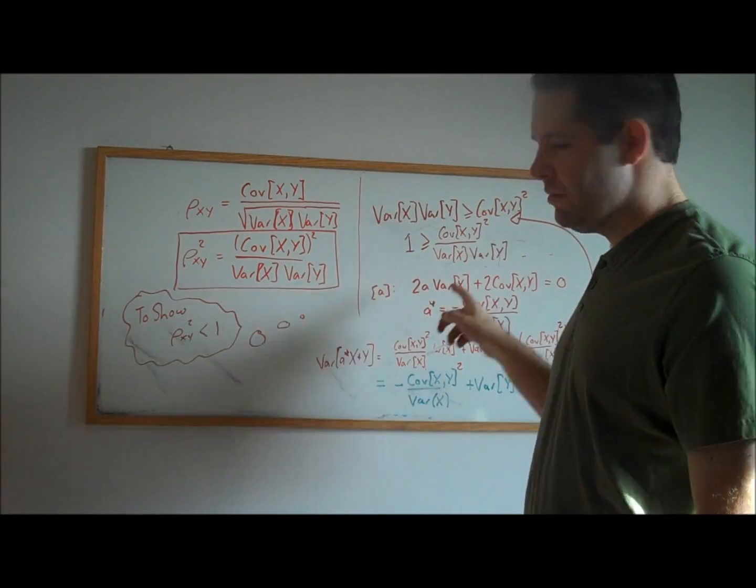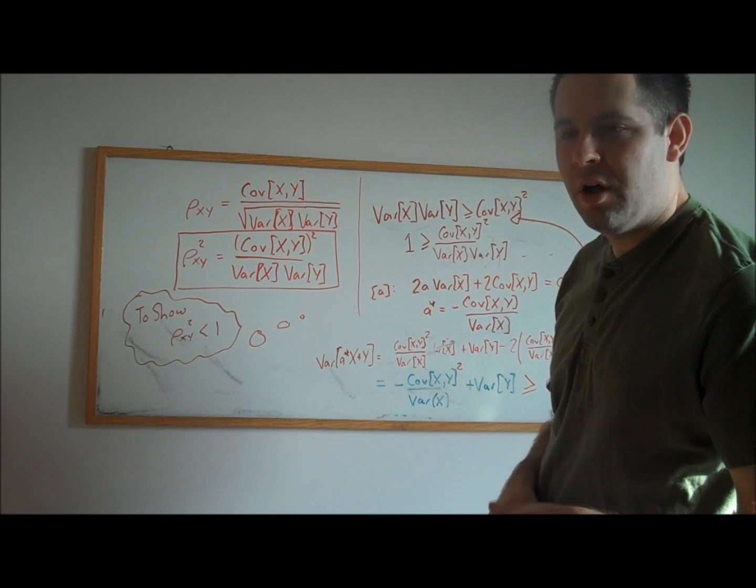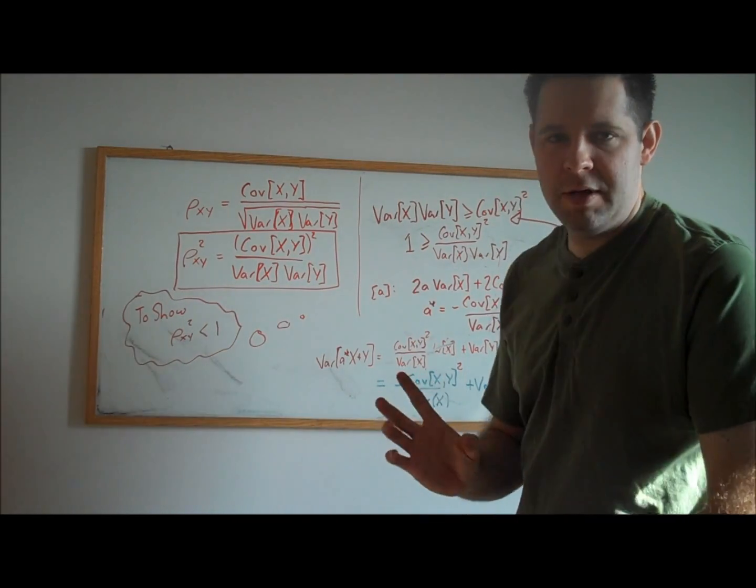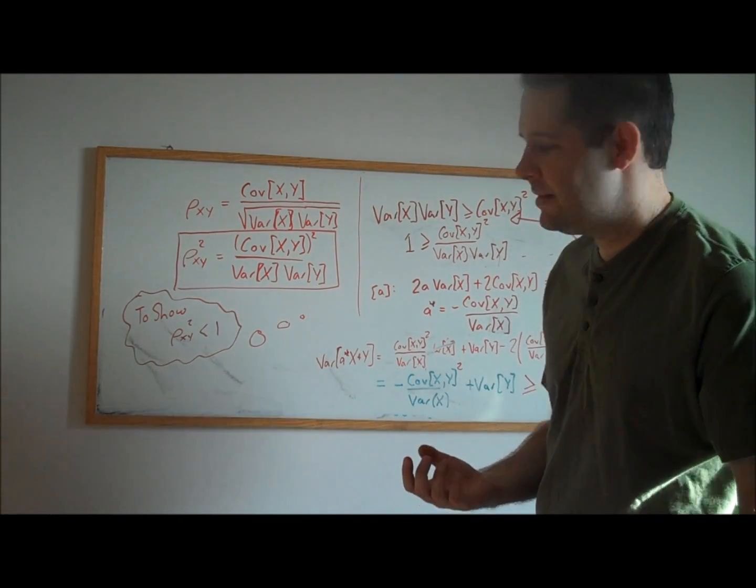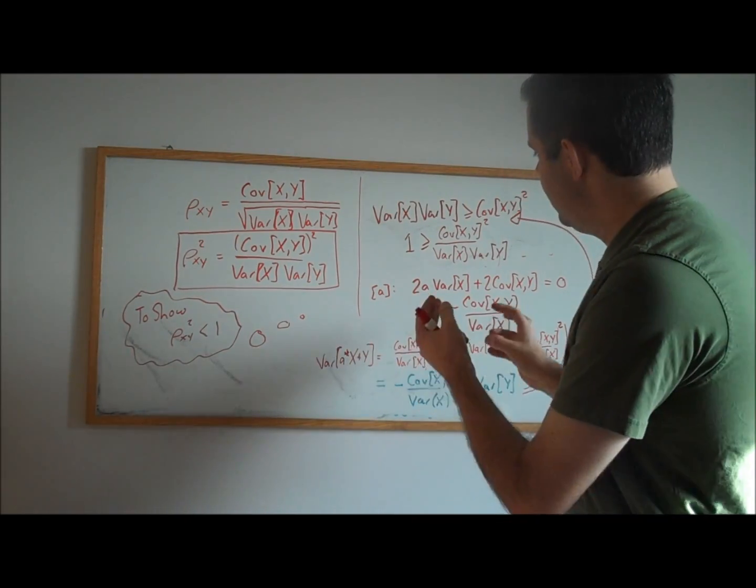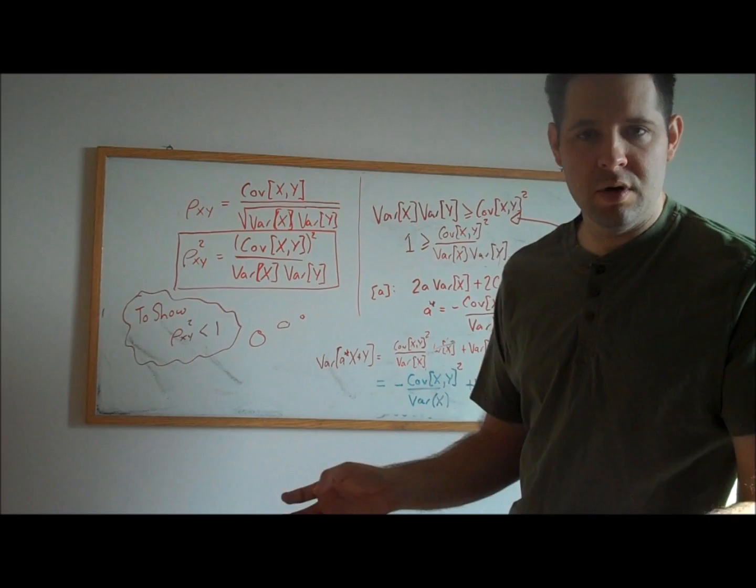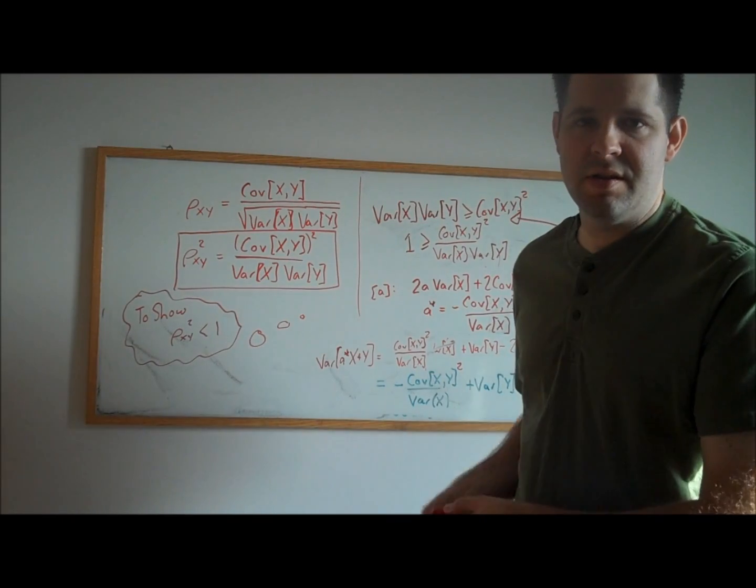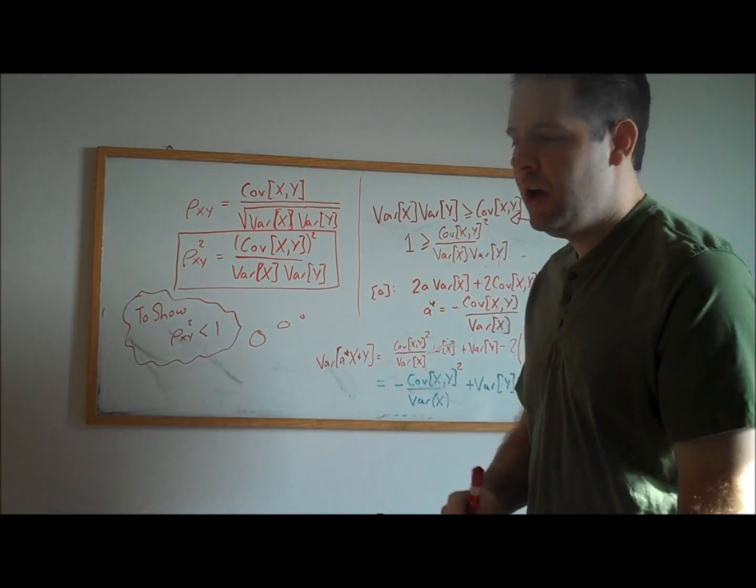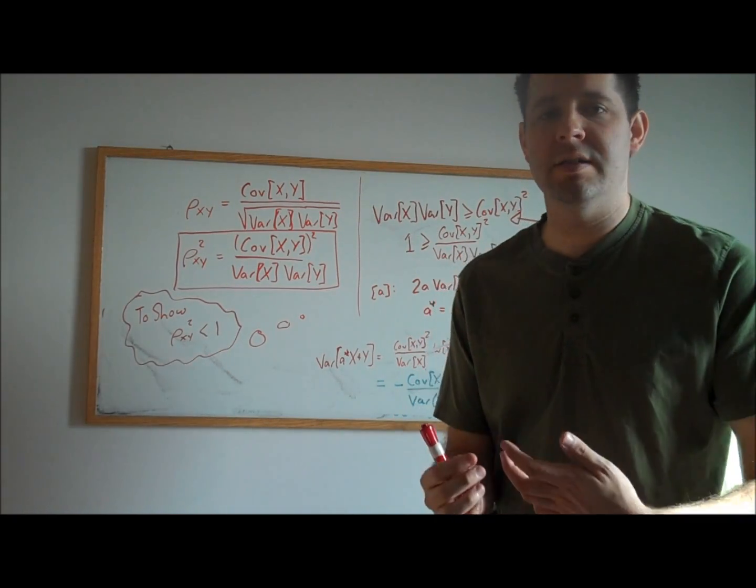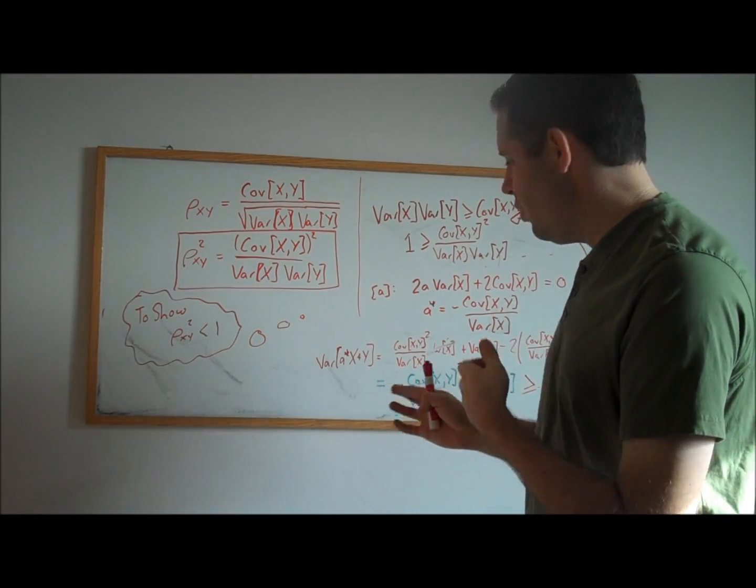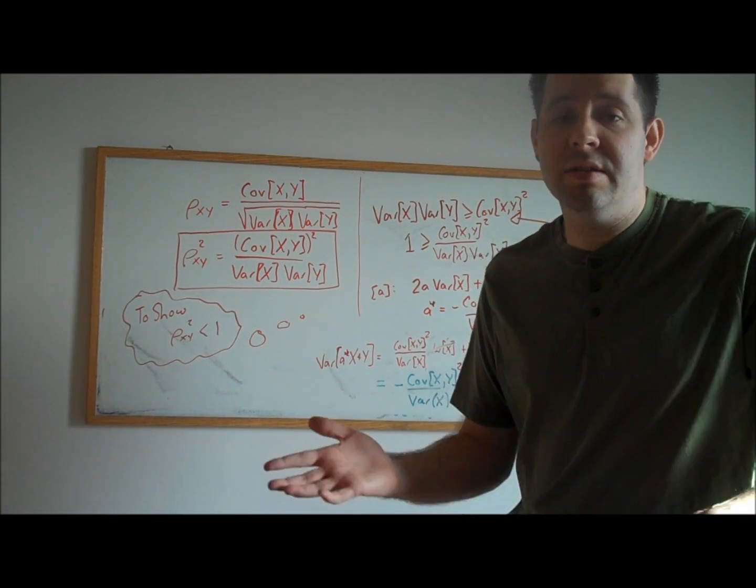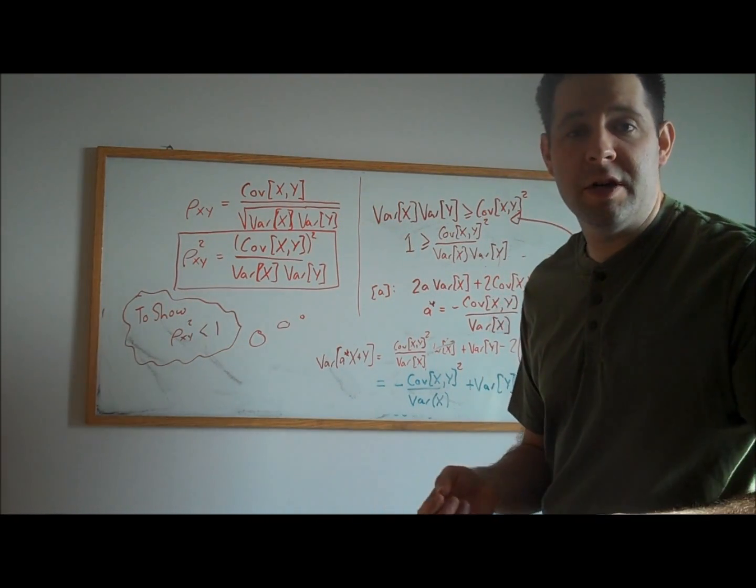The value of this proof isn't so much in the result, but getting used to all of the different ways that you can manipulate variances and covariances. In econometrics, we're going to be doing a lot of manipulating covariances and variances. That's going to be very important. So understand the proof not only for the result that correlations are between negative 1 and 1, but also understand the proof for the manipulations that we do. How do you deal with a linear combination of random variables? Can you compute its variance? How can you perform some algebra with covariances and variances? Those are very important concepts, and you'll need to master them when you're doing an econometrics course.